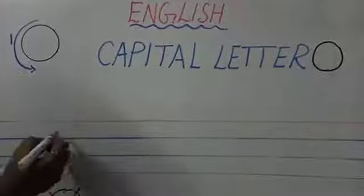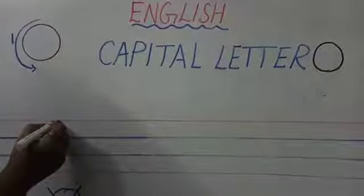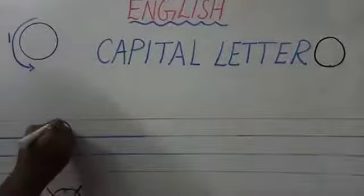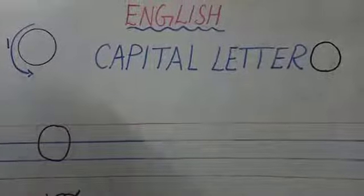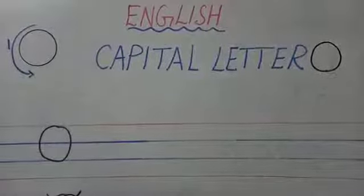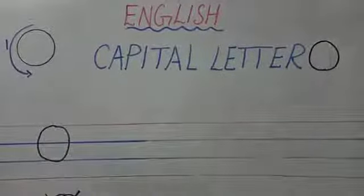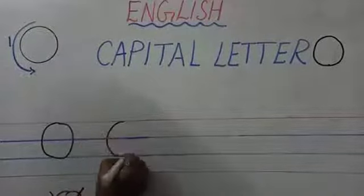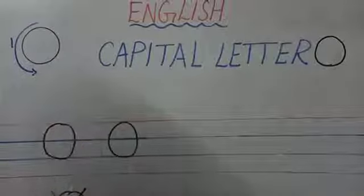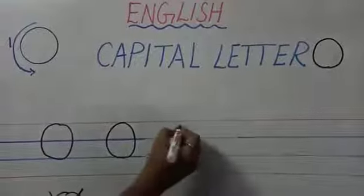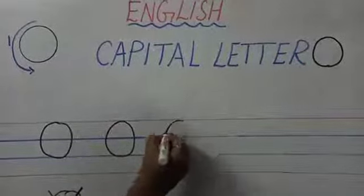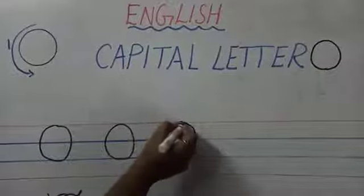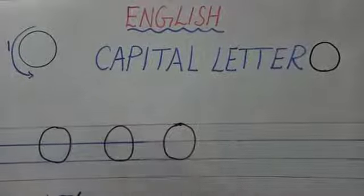We are going to start from the red line. Now make a curve and come to the same point. What is this letter called? Capital O. Capital letter O. This is called capital O. Again one more time — capital O. This is called capital O.